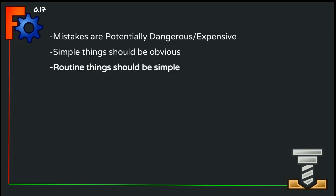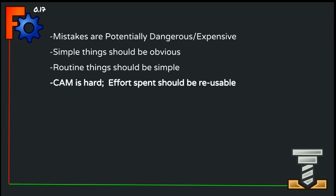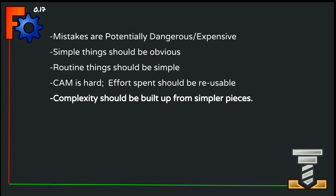Routine things in the workbench should be simple. Operations that happen in almost every job — like planing off the top surface or cutting out the final part from surrounding stock — should be configurable with a bare minimum of clicks. We recognize that CAM is complicated and hard, so any effort the user spends configuring their workspace or setting up a job should be reusable whenever possible. We should put effort into developing preferences, templates, setup sheets, and tool controllers so they can be configured once and reused. Because operations and jobs can get complex, we should manage that complexity by building it up from smaller, simpler pieces, with operations having the bare minimum of configuration and additional complexity applied as a separate step.